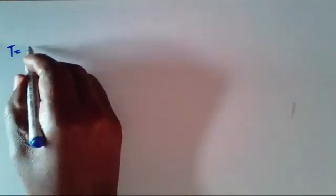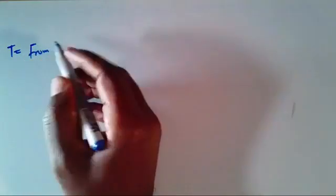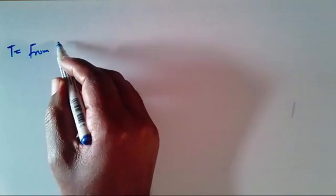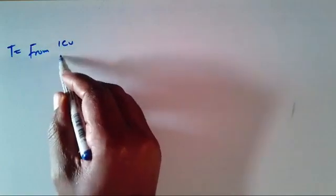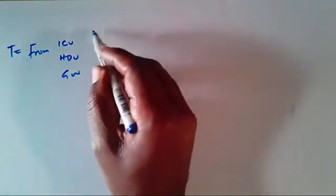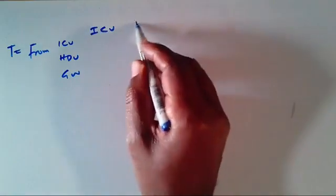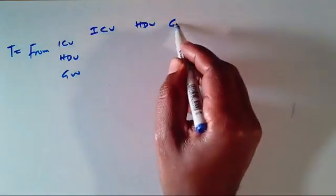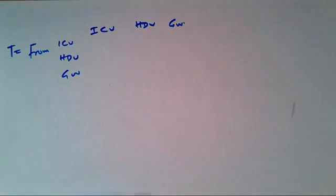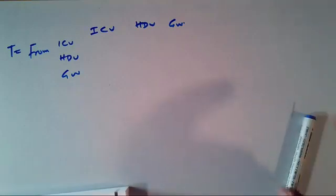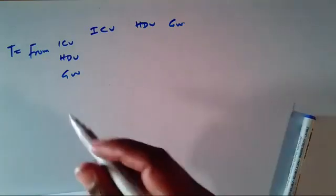Here we have our transition matrix. We have the states ICU, HDU, and General Ward — both as rows (from) and columns (to). This transition matrix captures movements of subjects of analysis from one state to the other.